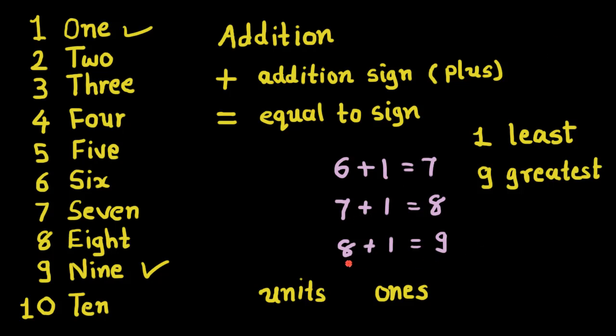And here, after adding 1 in 9, we can see now we have a 2 digit number. And it is called 10. 1, 0, 10.